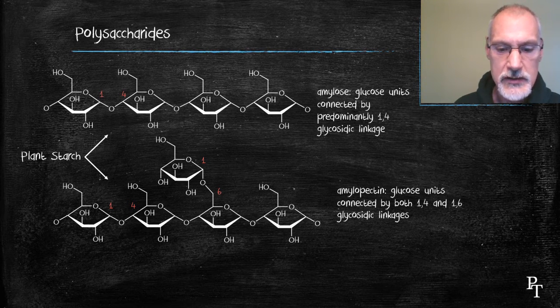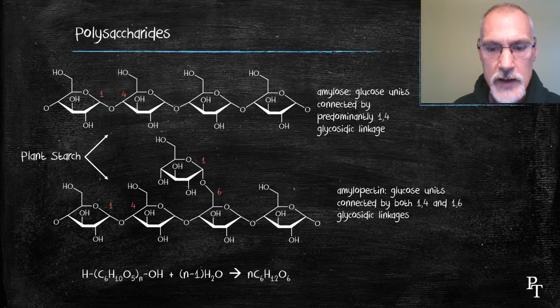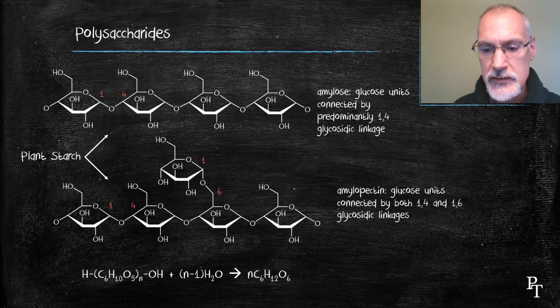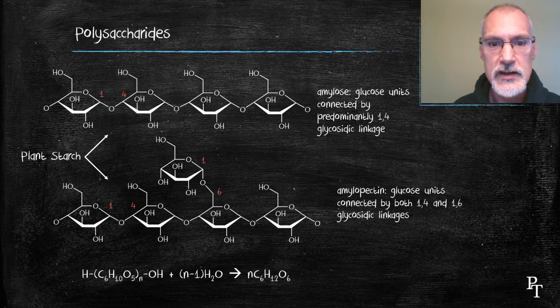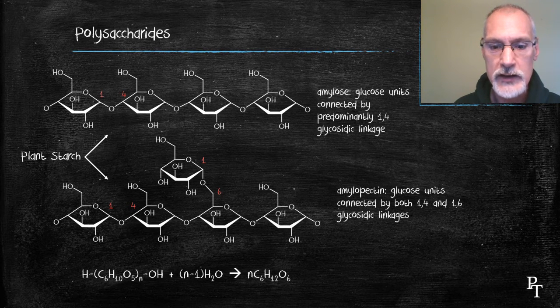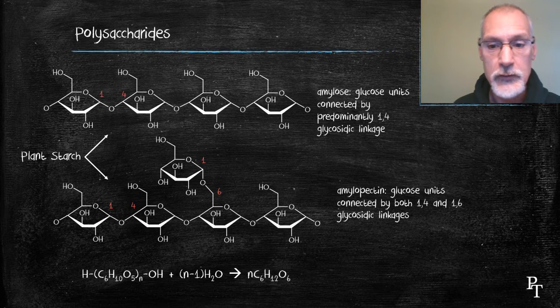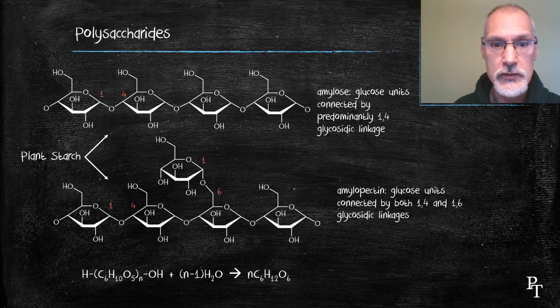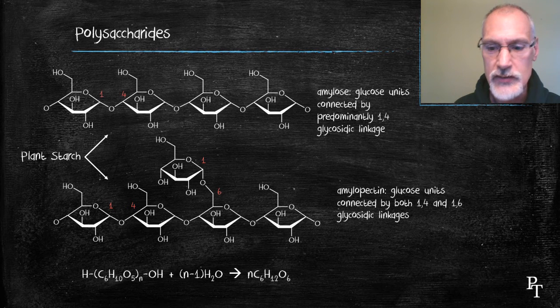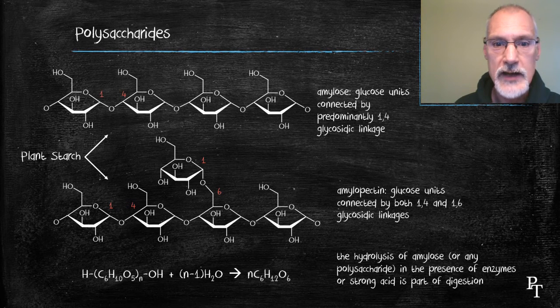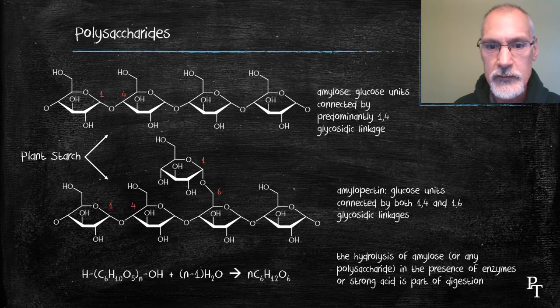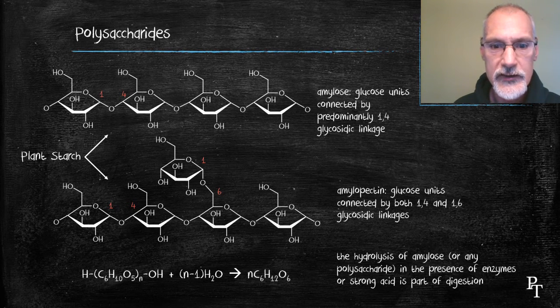If I take a plant starch and hydrolyze it, react it with water, I can break it back down into the units from which it came. You'll notice that to balance this equation, that I'll need one less water molecule than the number of units. So for instance, in the reaction up above, which shows four units, I would need three units of water to perform the hydrolysis experiment. The conditions required for the reaction would either involve the use of a carefully chosen enzyme or acidic conditions.